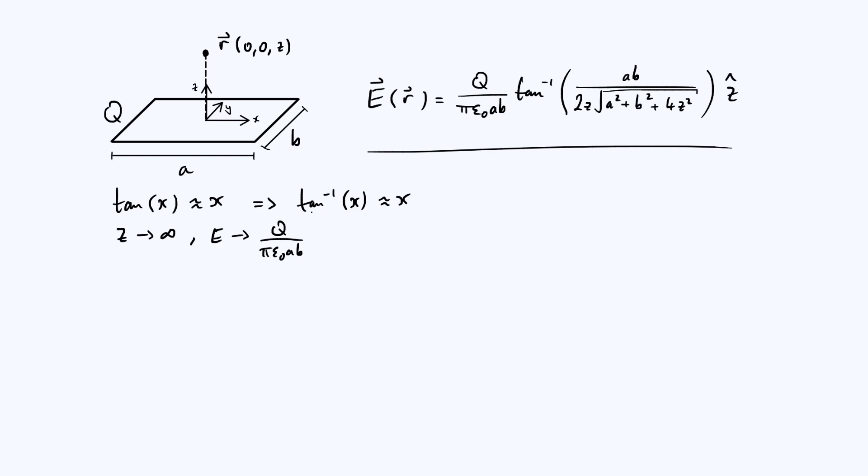So you can use the fact that tan inverse of something is roughly equal to the argument itself. So you could just put ab over 2z root a squared plus b squared plus 4z squared, or you could note that in fact this a squared and the b squared are negligible as well. As z is getting very very big, 4z squared is going to dominate over a squared plus b squared.